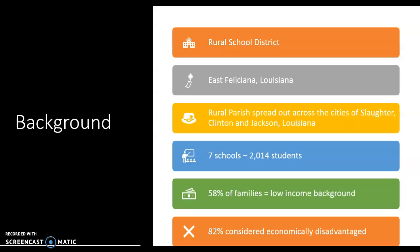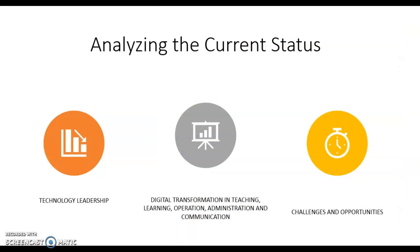We are a rural school district. I work in the very countryside of Clinton, East Feliciana Parish. We are spread out across three cities — Slaughter, Clinton, and Jackson — and there are seven schools within the district with a total of 2,014 students. 58% of families are considered low-income and 82% are considered economically disadvantaged.